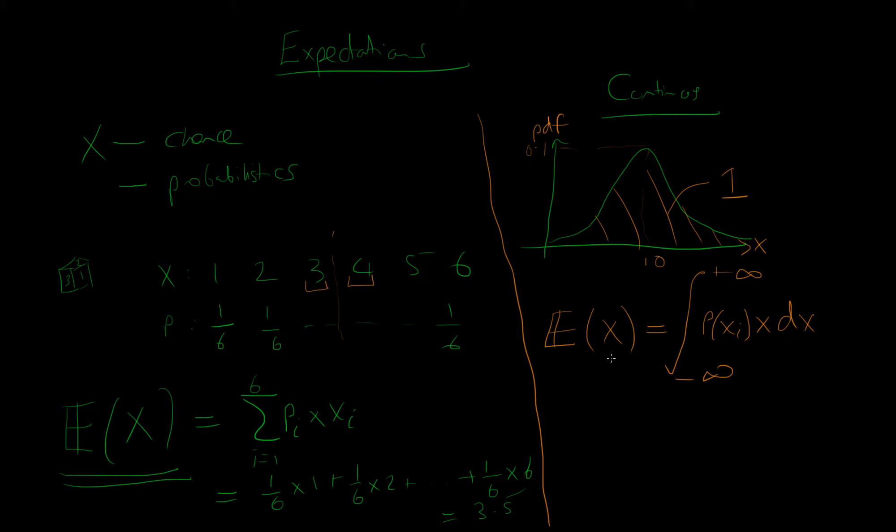So the expectation tells us what value of X we would get on average if we were to, in the case of a die, throw it multiple times. In the case of continuous variable, take a random sample of X from that same distribution a number of times. That is the value which we retain on average.